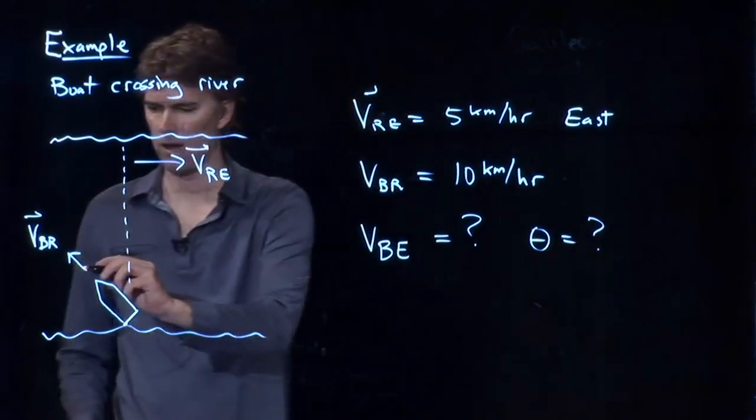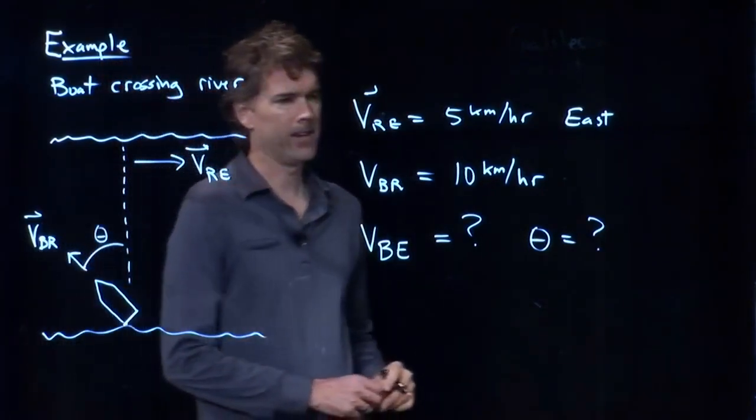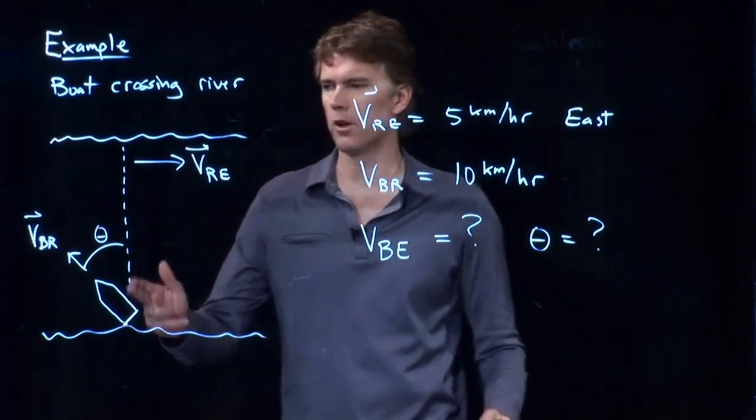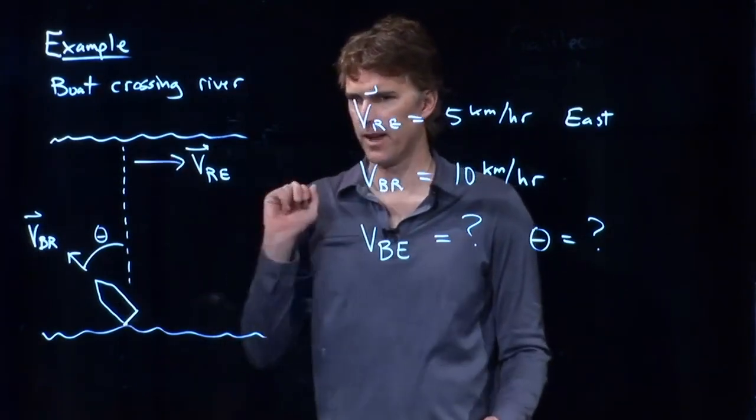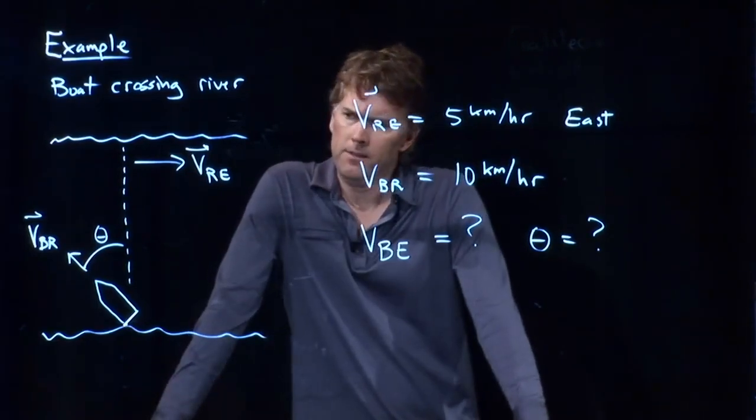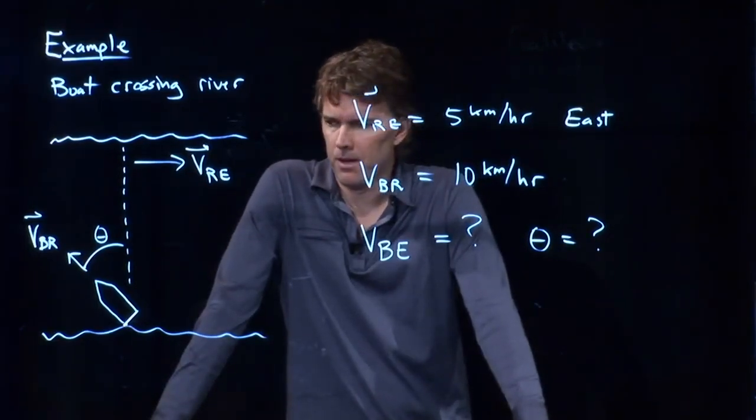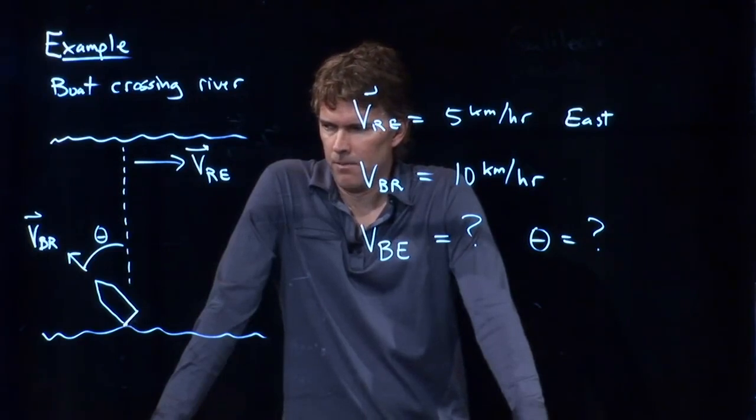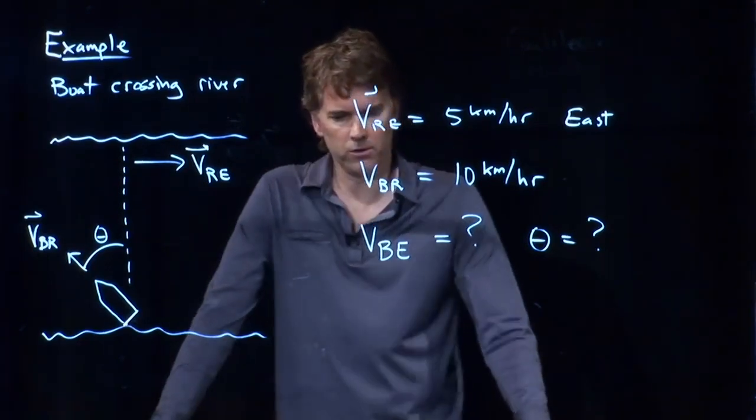And at what angle do we need to orient it? Namely, this angle right here. And the goal is to go straight across the river. That's the caveat here. There's a couple different ways to think about this problem. But one way to think about it is the following. We can just draw some vectors.